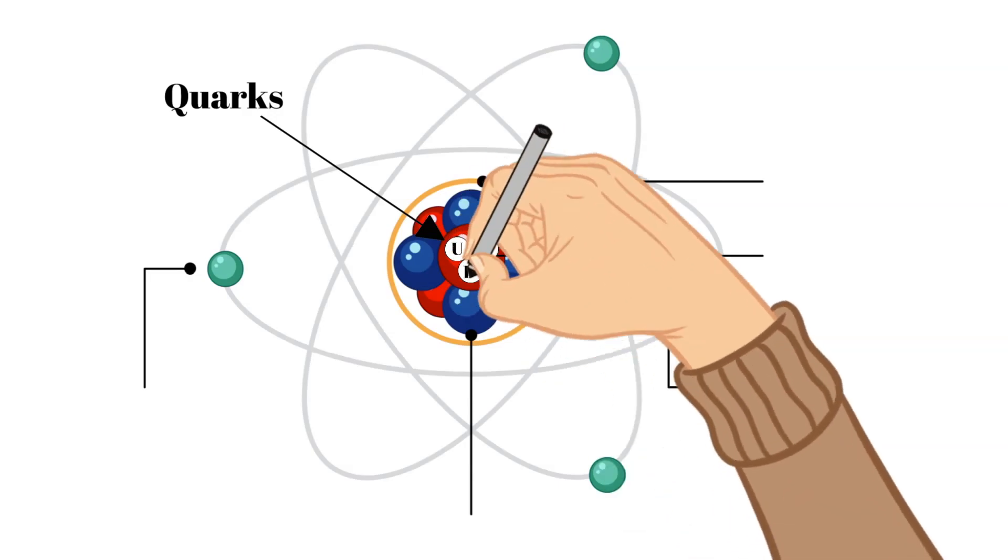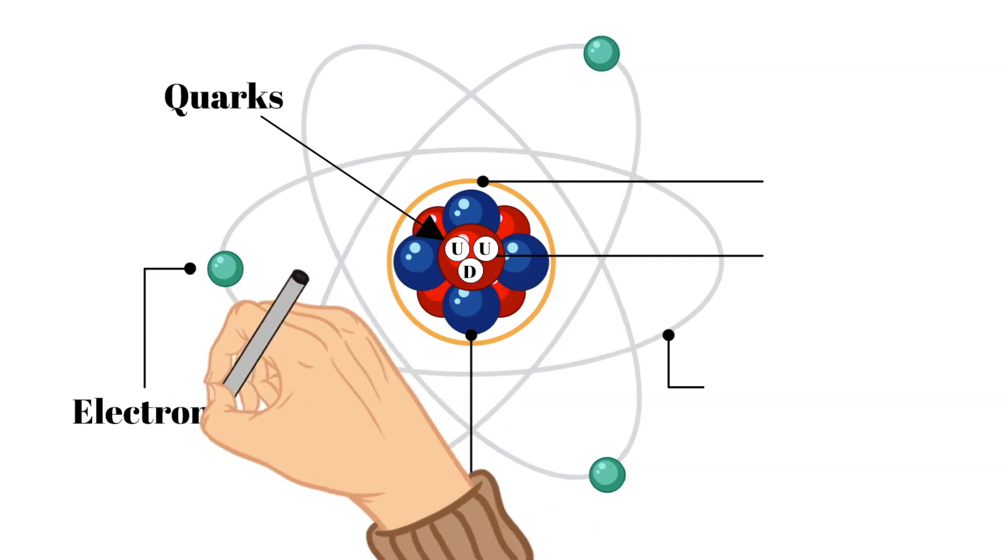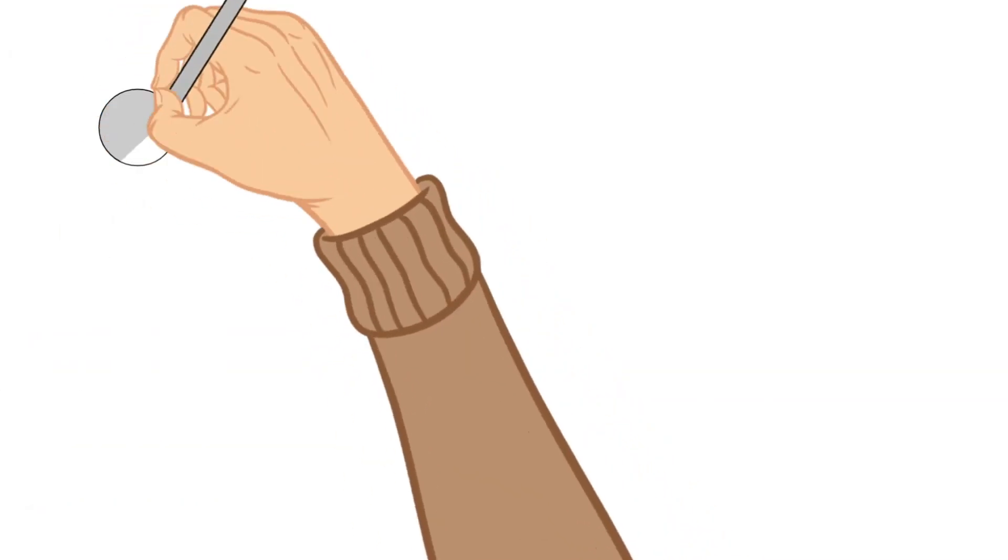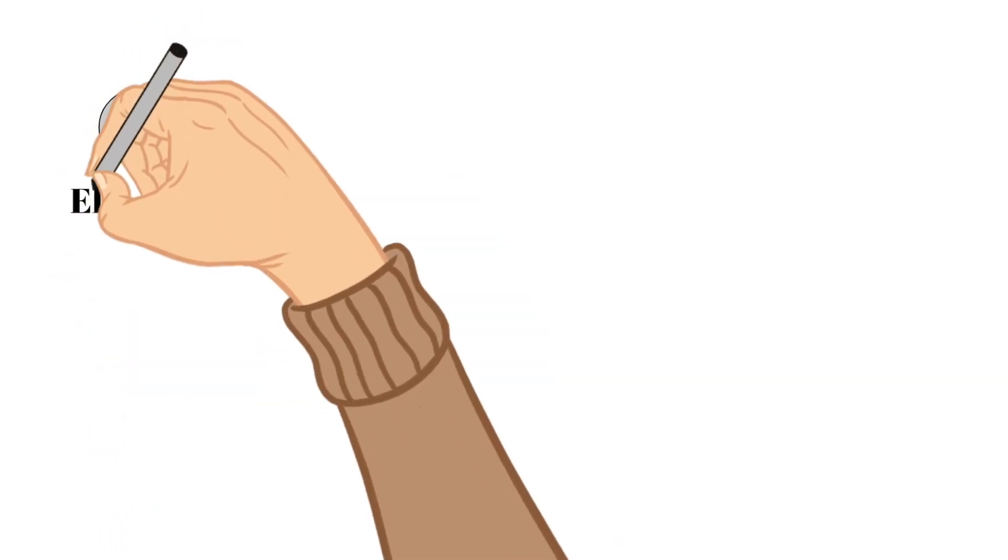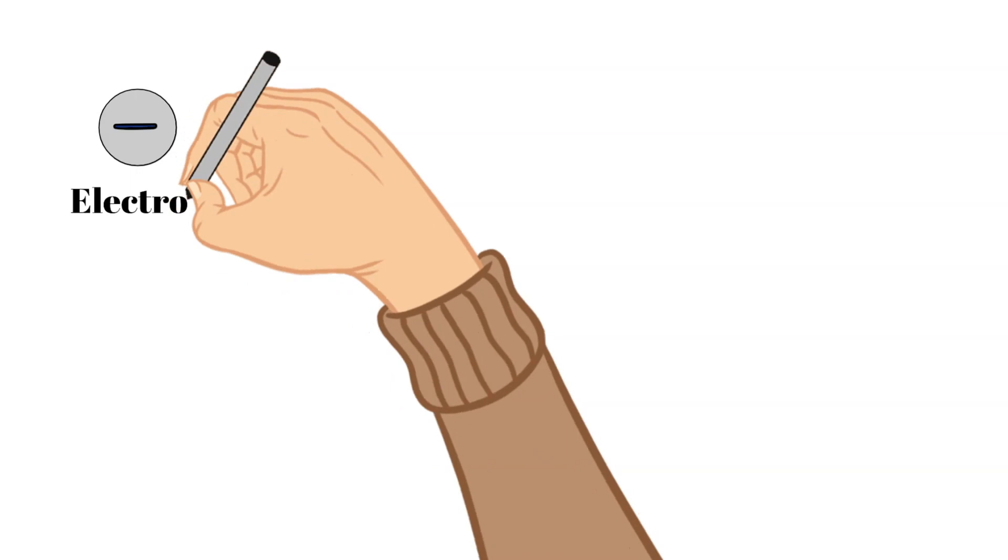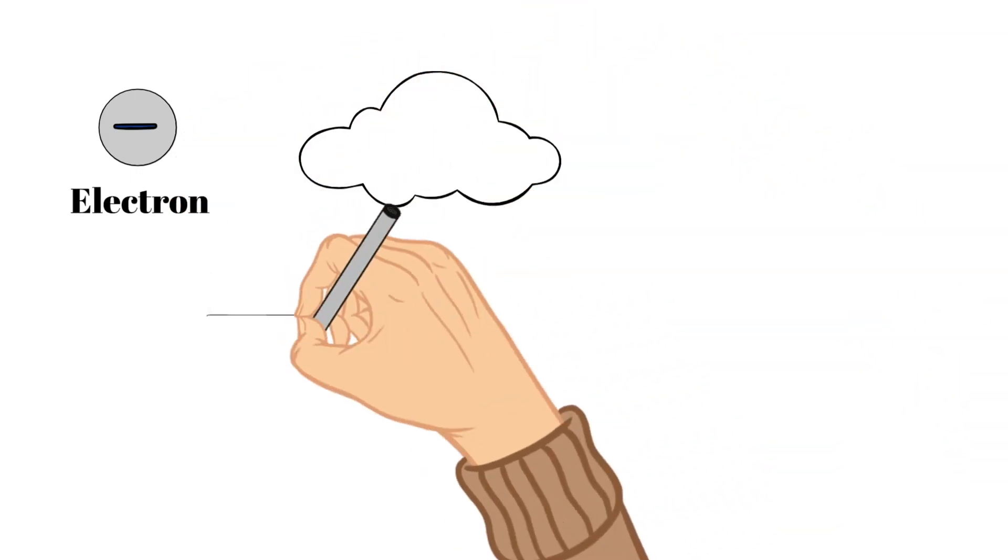The last part of the atom that we need to talk about today are electrons. Electrons are negatively charged particles that circle the nucleus of the atom. They circle so fast that they create what's called an electron cloud around the nucleus.